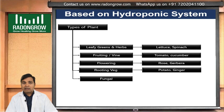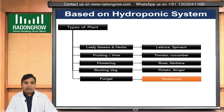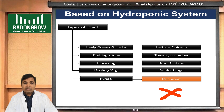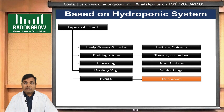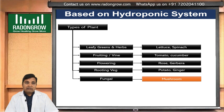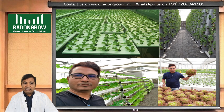Another category is fungal, or mushrooms — mushroom is one kind of fungal. It requires a totally different system. Hydroponics is different and fungal or mushroom cultivation is different, so please don't merge mushroom growing with hydroponics — both are totally different systems.